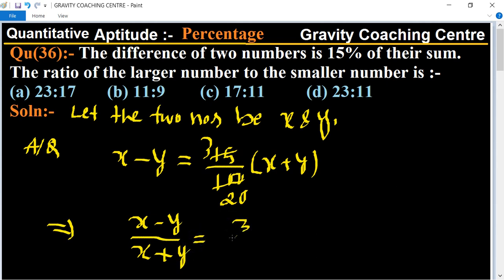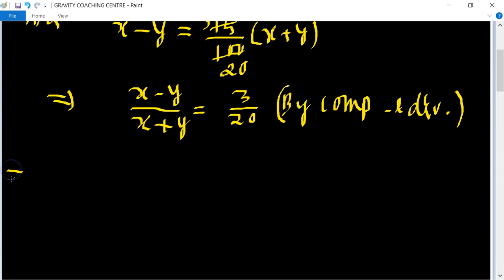Now use componendo and dividendo. By componendo and dividendo, this becomes x minus y plus x plus y upon x minus y minus x minus y, equals 3 plus 20 upon 3 minus 20. The y and x terms cancel.